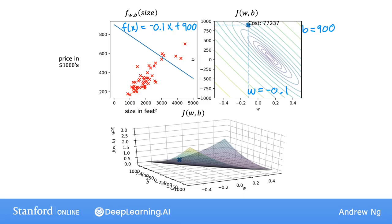Now if we take one step using gradient descent, we end up going from this point of the cost function out here to this point, just down and to the right. And notice that the straight line fit is also changed a bit.